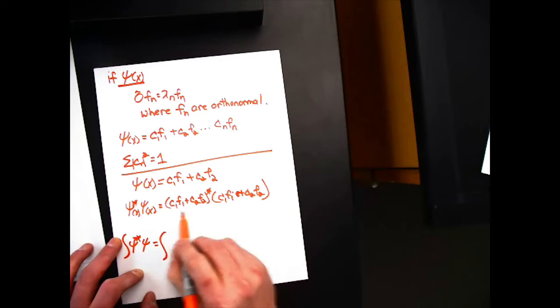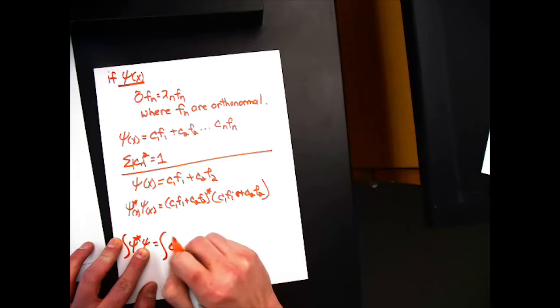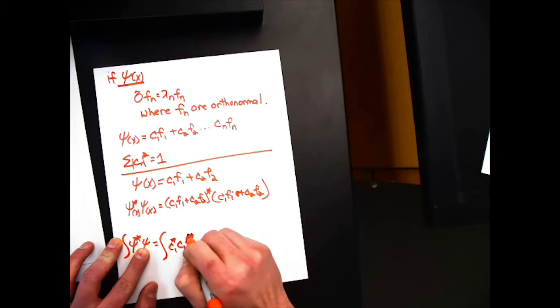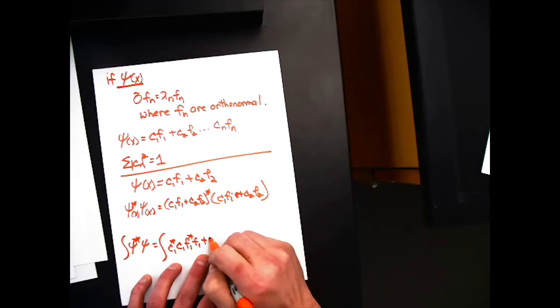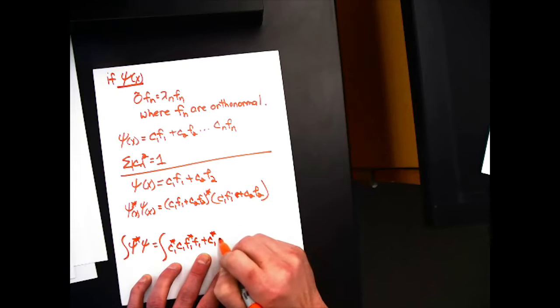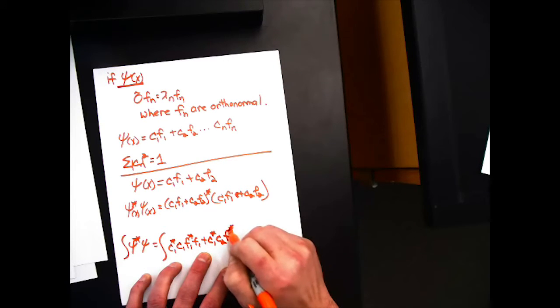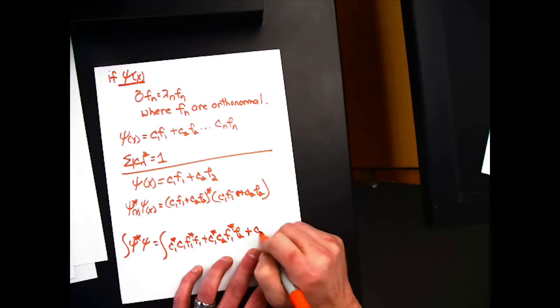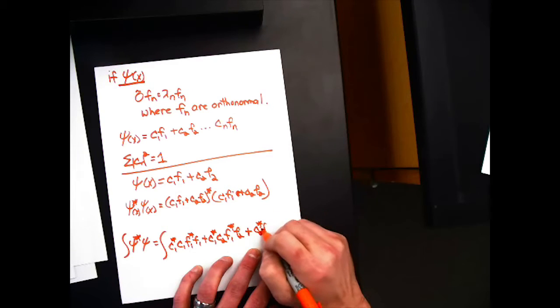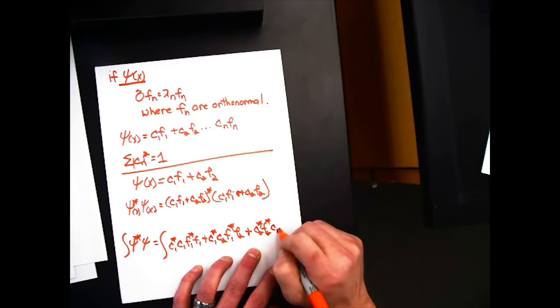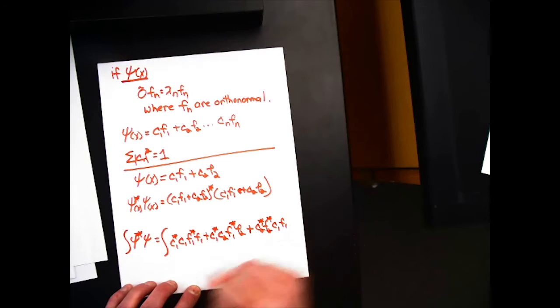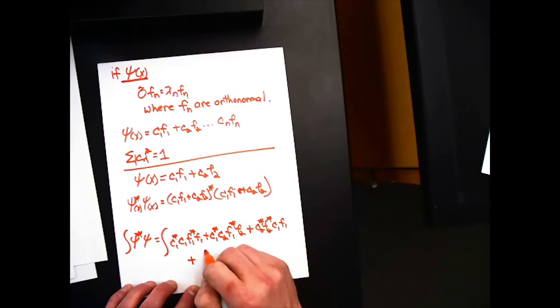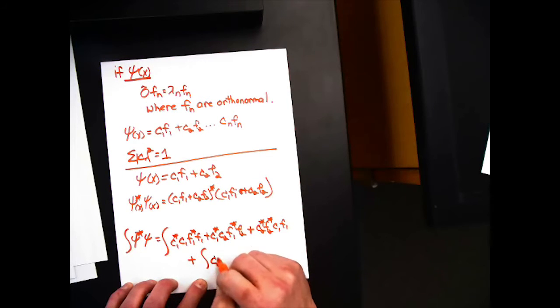So we can get c1 star c1 f1 star f1 plus c1 star c2 f1 star f2 plus c2 star f2 star c1 f1 plus c2 star f2 star c2 f2.